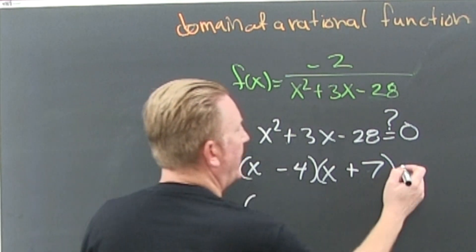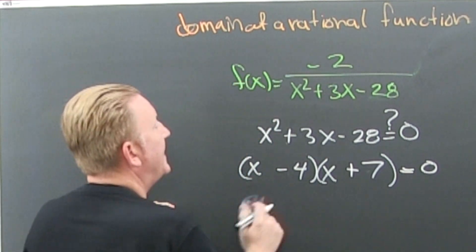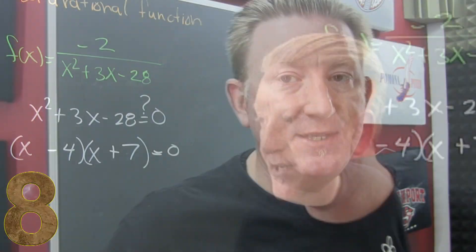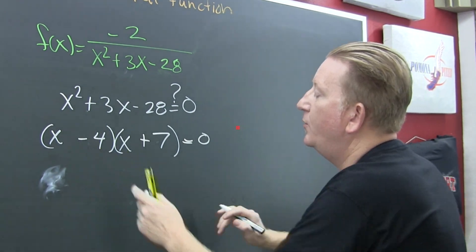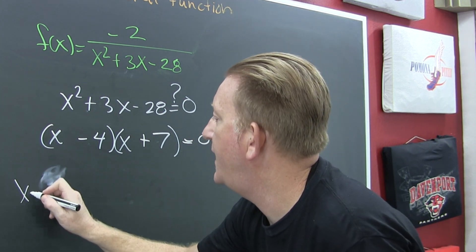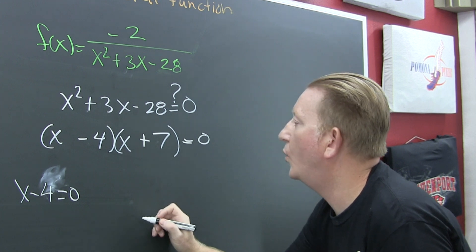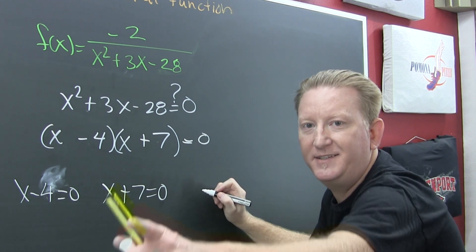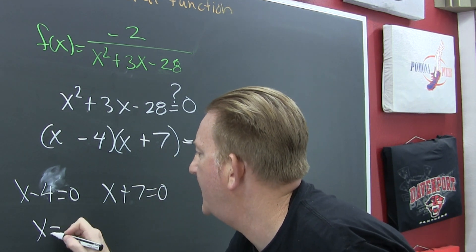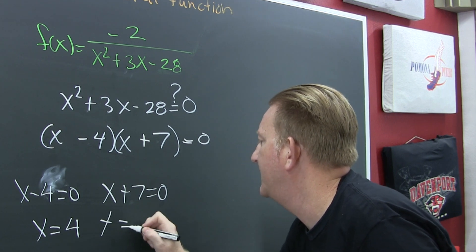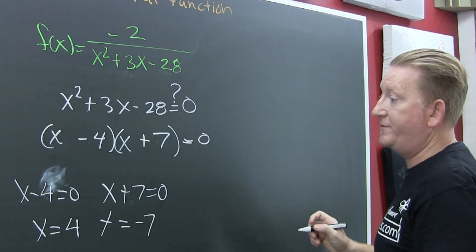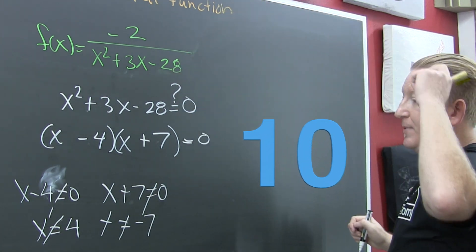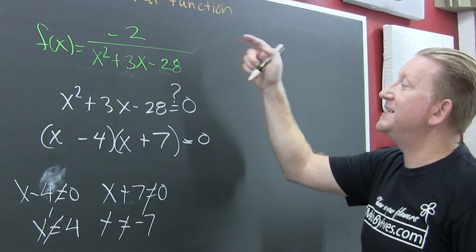So what do we see? This denominator needs to be not equal to zero — because we can never divide by zero. So I set each one of those factors equal to zero: x minus four equals zero, or x plus seven equals zero. This gives x equals four and x equals negative seven. And those are the values that x cannot equal, because you can never divide by zero — those are the values that make the denominator zero.